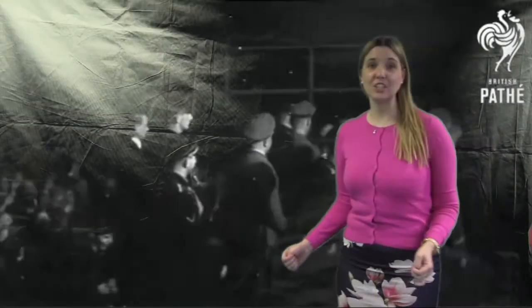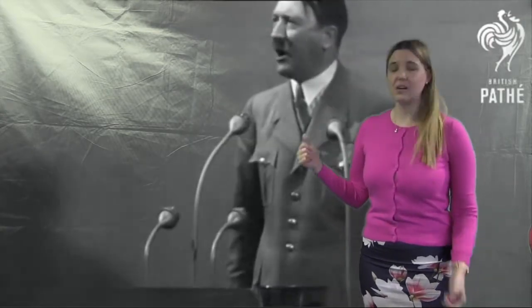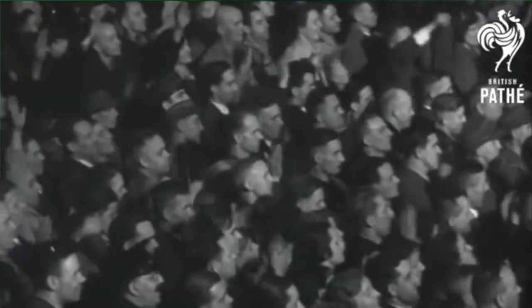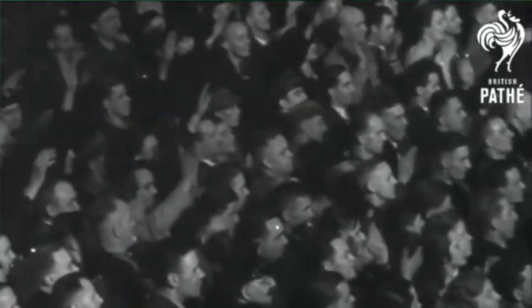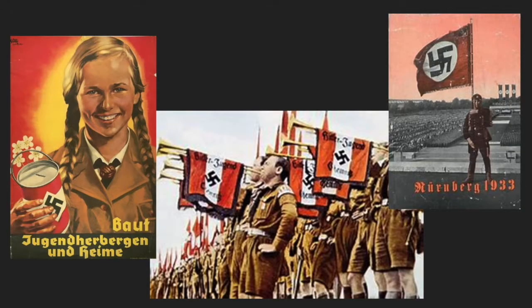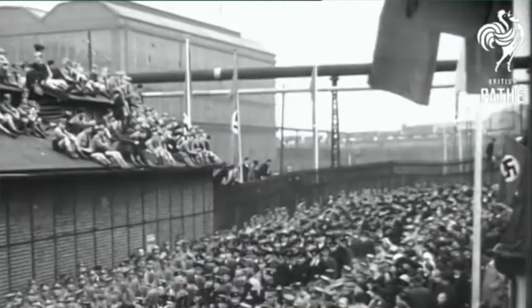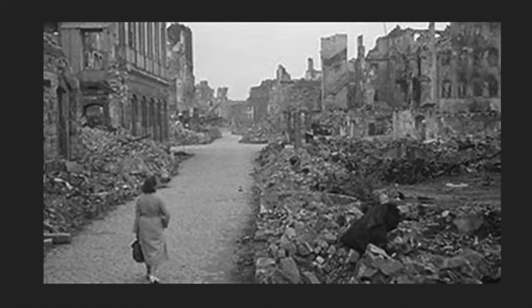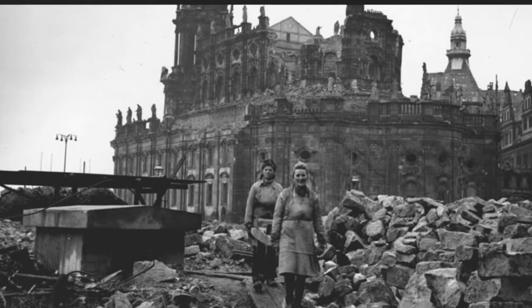Here I am at the Nuremberg rally — and you can see this guy has just become leader of Germany. He looks quite popular. As part of our GCSE course, we look at how he came to power — that's Hitler — and also how he controlled people. We look at propaganda, we look at terror groups, and then we look at the impact of World War II on the German people.